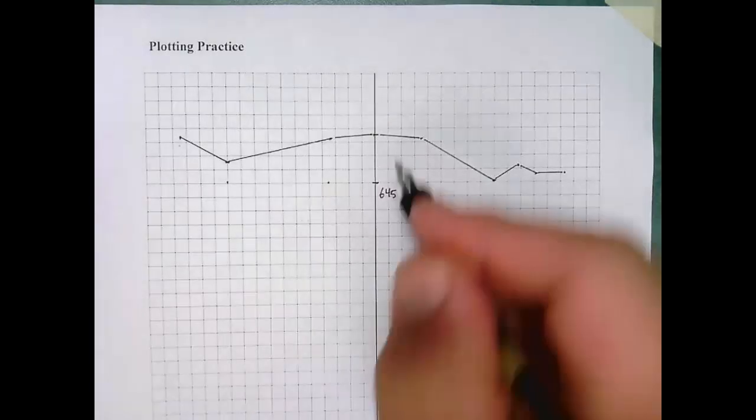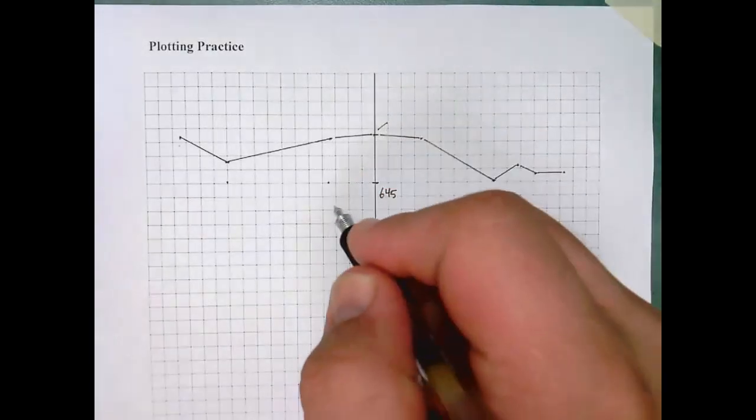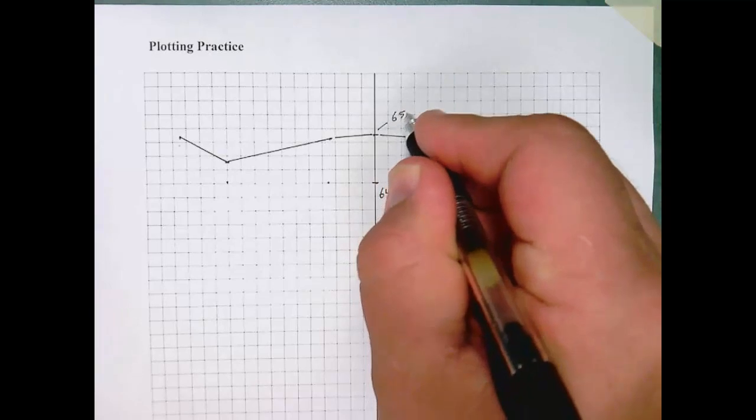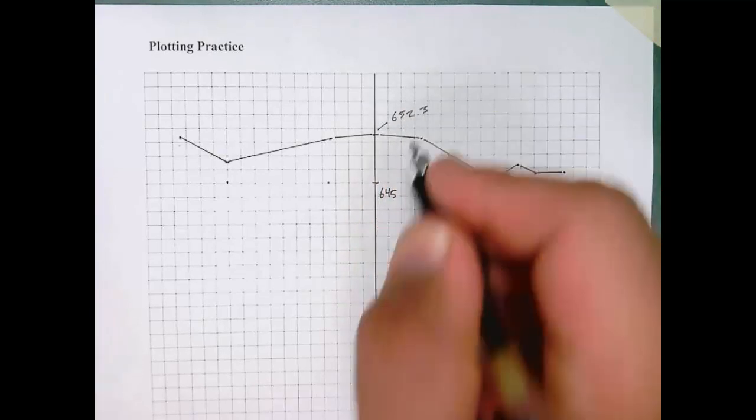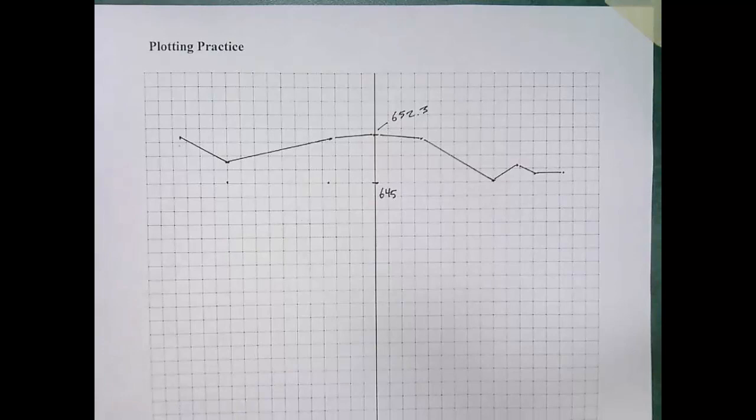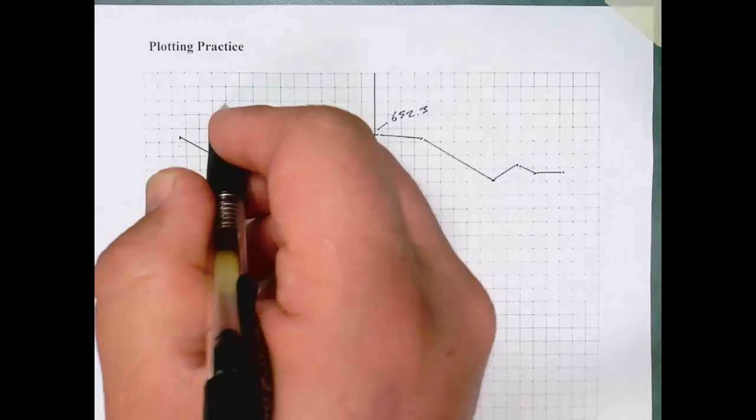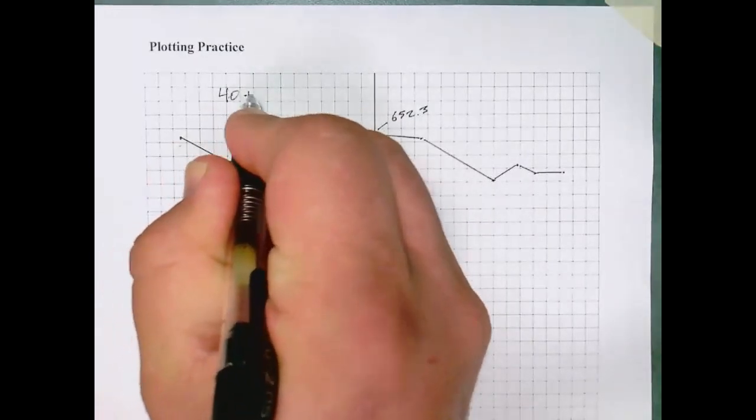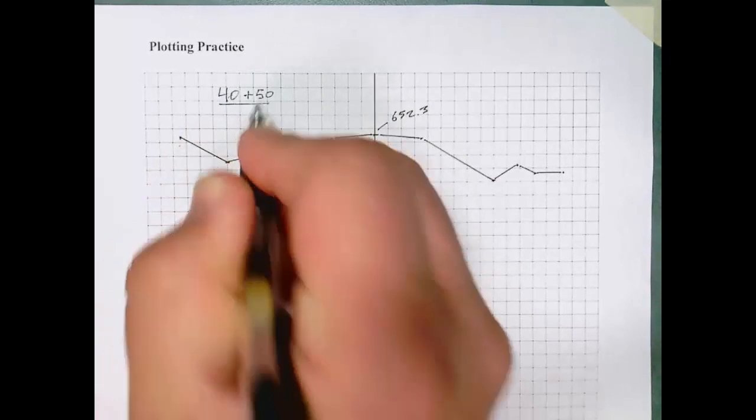Okay, so there is our first cross section, and we like to label the elevation there. That's 652.3. That's the elevation at the center line of this roadway cross section. So that center line is going right down the middle of the roadway. And we'll label the station here so we know which cross section this is.